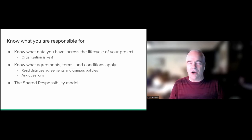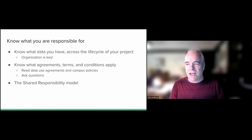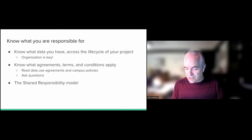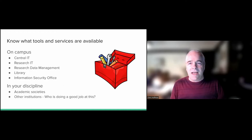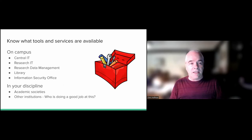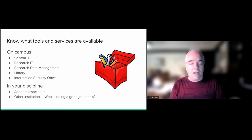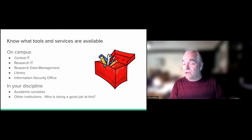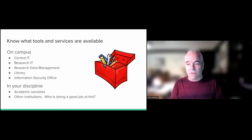You'll hear a lot about the shared responsibility model when talking about data security. That just means everyone has a role to play in protecting data — that includes you, your advisors, your peers, and IT providers and the university as a whole. Second, there are tools and services available to you. Many might be available on your campus through a central IT office, a research IT office, research data management programs through your library, and through your security office. Also look outside — what's going on at other institutions? Do academic societies provide resources or advice on ways to protect your research data?